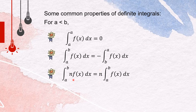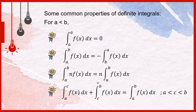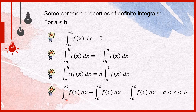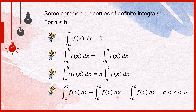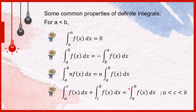The constant n of the integral can be taken out. And for values of a less than c and c less than b, the integral of f of x from a to c plus the integral of f of x from c to b can be simplified as the integral of f of x from a to b.